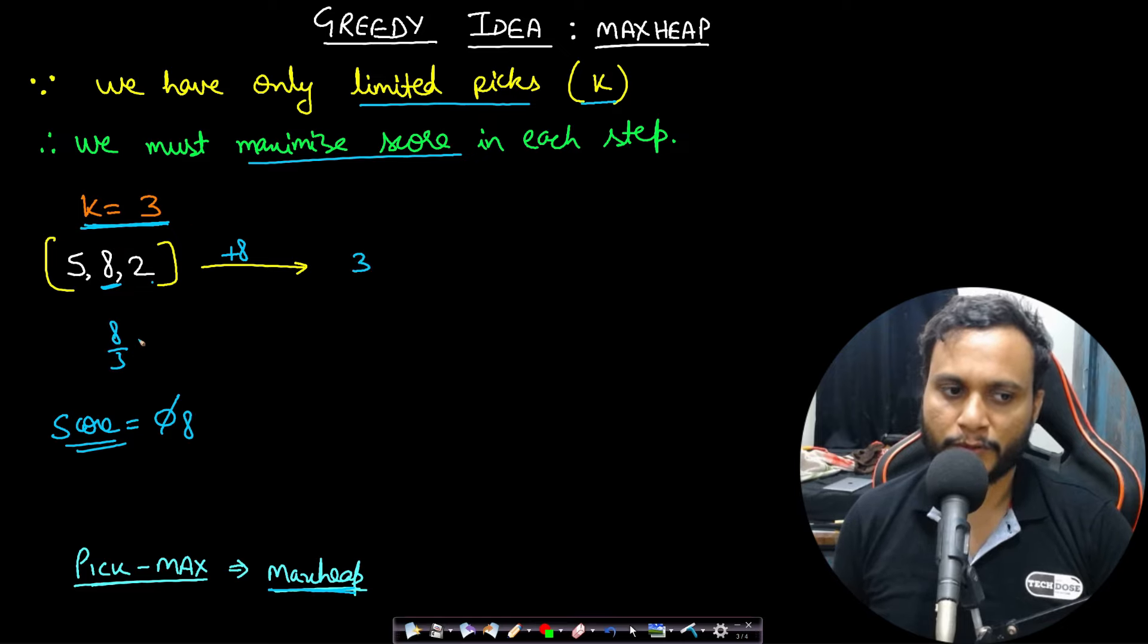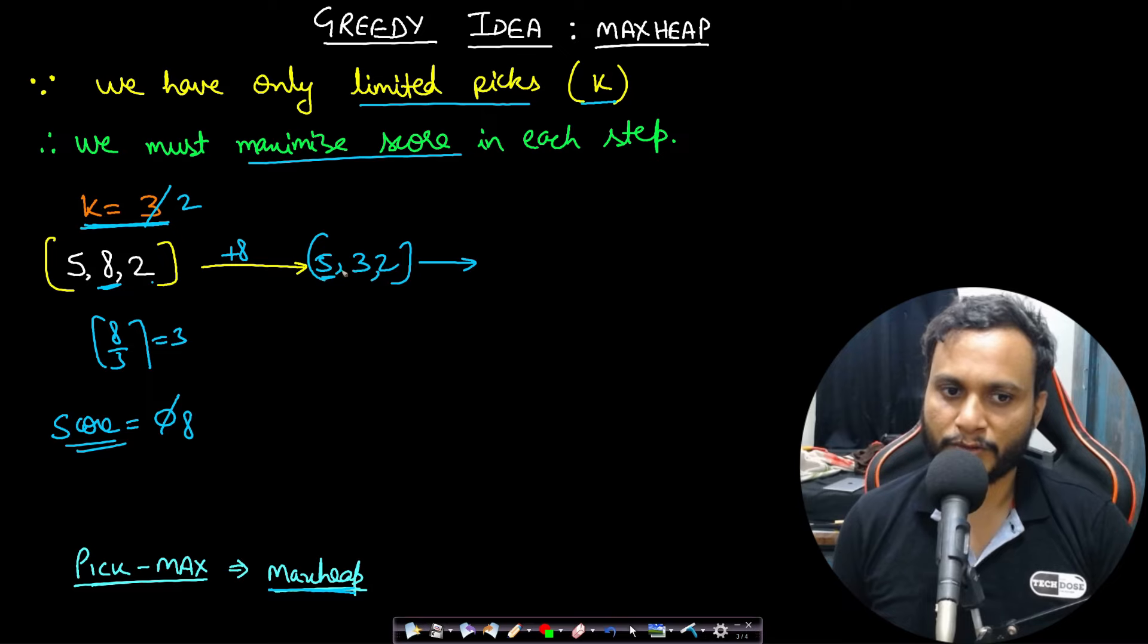8 by 3 will give you 2 point something, so this will become 3. This became 3 and the rest items will not be touched. So now k value will decrease to 2. Now in the next step you will pick the maximum value, so the maximum value will be 5. When you had changed this 8 to 3, the 3 will be pushed back into your heap. So the heap will always maintain n items.